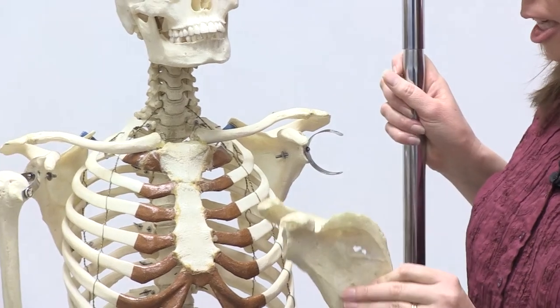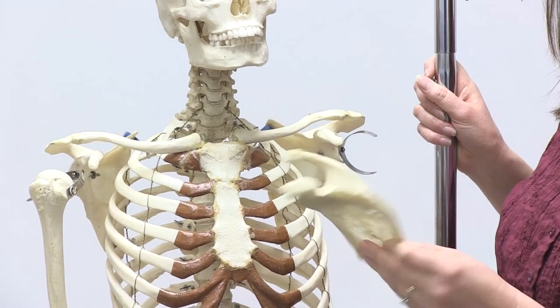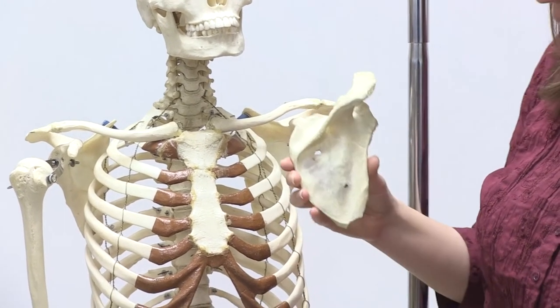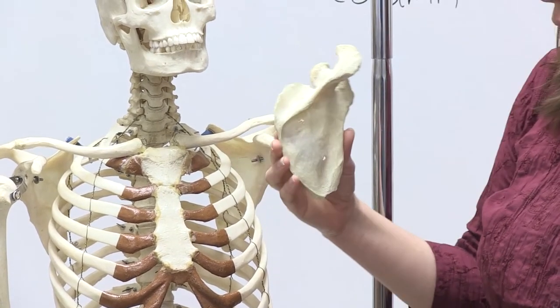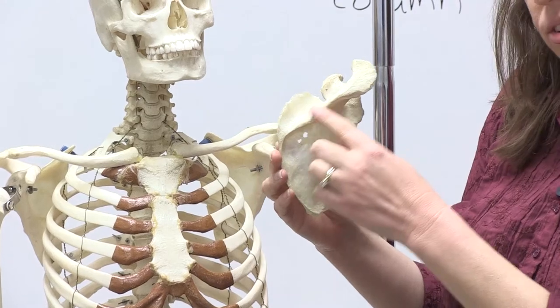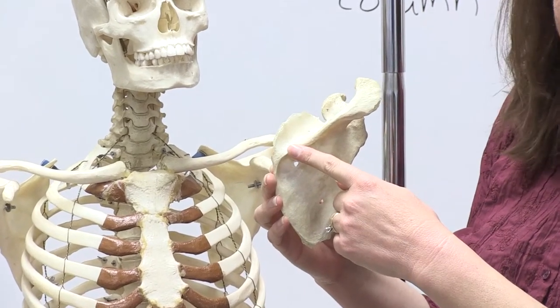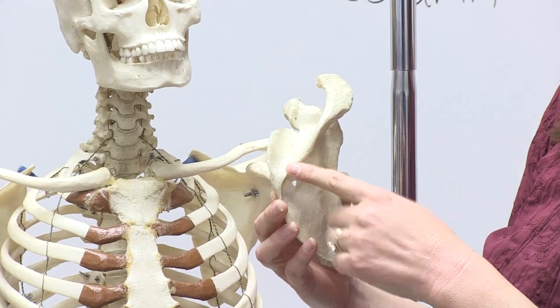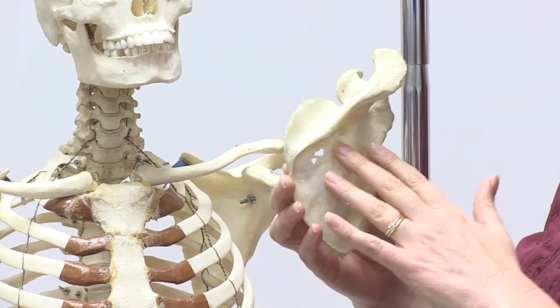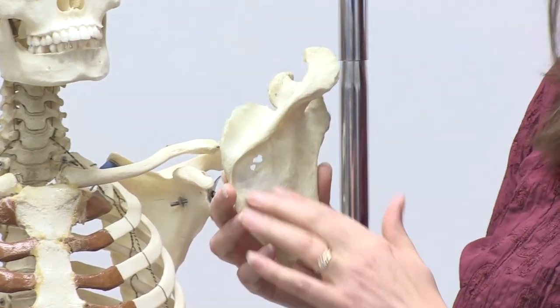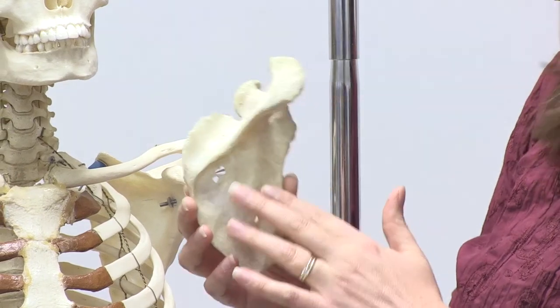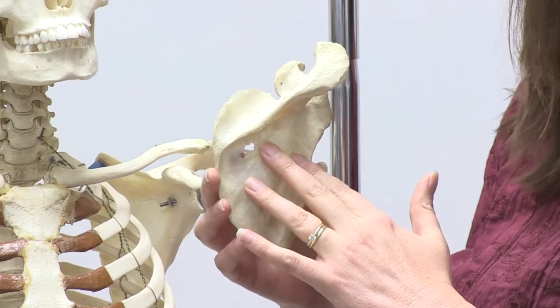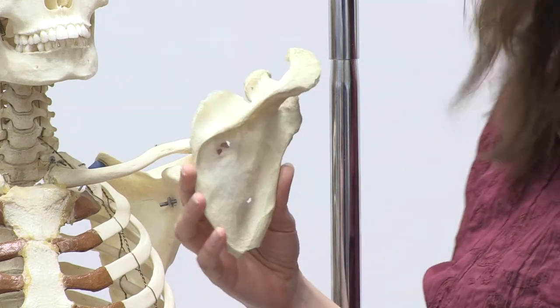Now if we look on the posterior side, essentially, of this scapula, you'll notice several features as well. One very prominent feature that you can see here is what's called the spine of the scapula. This is actually a major division point between two fossas: one here on the inferior side called the infraspinous fossa, and there is actually a muscle there as well, and then the supraspinous fossa.